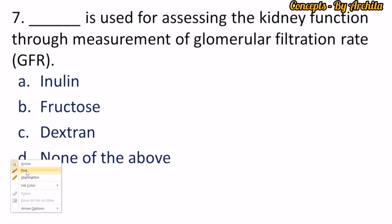Question 7: Which carbohydrate is used for assessing kidney function through measurement of glomerular filtration rate? The correct option is inulin. Inulin is used to measure kidney function by measurement of the GFR. So the correct option is option A, inulin.